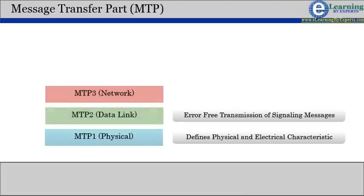MTP Level 2, Data Link Control, helps in error-free transmission of signaling messages between adjacent elements.